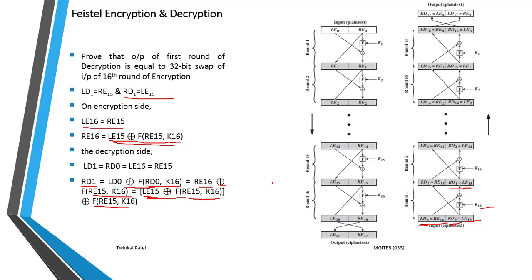This confirms the Feistel encryption and decryption process, in which the decryption process is the same as the encryption process — only the keys are used in reverse order for each round.